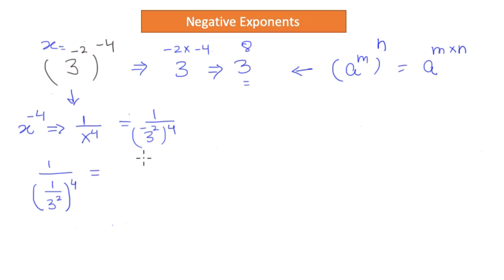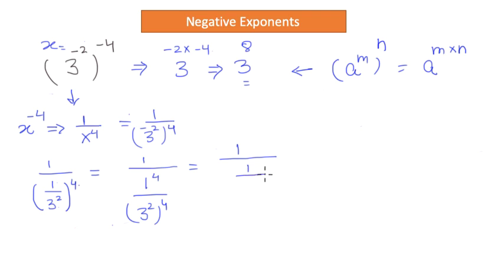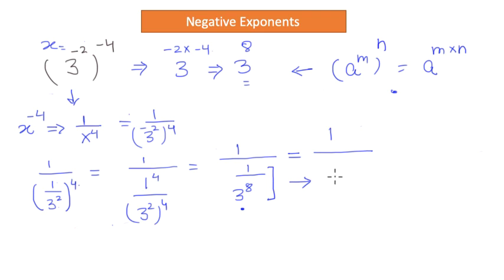Let us expand this. We get 1 over 1 to the power 4 divided by 3 to the power 2 times 4. When you open the parenthesis, you apply this power back to each number. So it becomes 1 over 1 divided by 3 to the power 8. In this step I am invoking the power-of-power rule. Now convert this step to negative power form — 1 over 3 to the power 8 can be rewritten as 3 to the power negative 8, simply by reversing the powers.